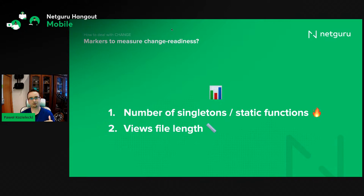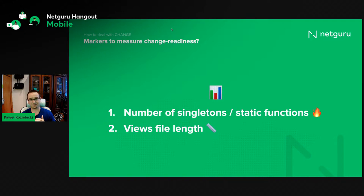The interaction with singletons is usually very difficult to test, especially when components just create those instances themselves. So probably you won't have any test coverage to ensure you don't cause regressions. The rule of thumb: if the application has many singletons and static functions, it's usually very difficult to change. Moving on, also look at how long your views are — not only view files but also view controllers. When view controllers are big, it means they're doing slightly more than they're supposed to, like logging to Facebook or executing network calls.